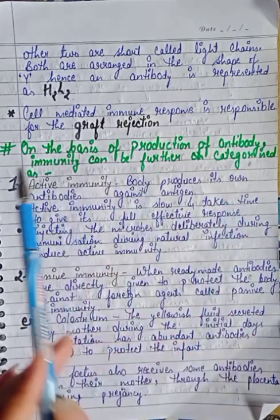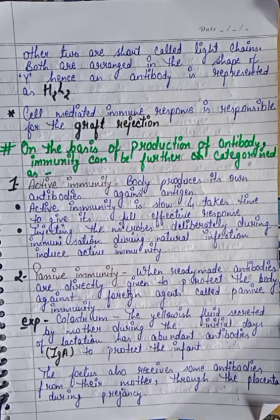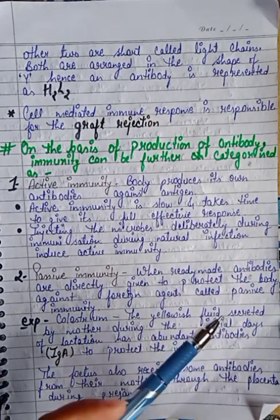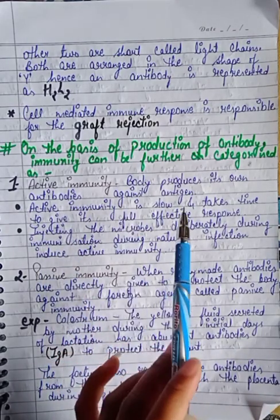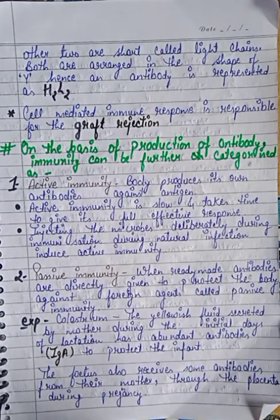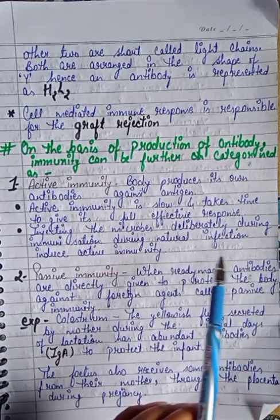On the basis of production of antibody, immunity can be further categorized as active immunity and passive immunity. In active immunity, the body produces its own antibodies against antigens. Our body produces antibodies itself against foreign agents or antigens. Active immunity is slow and takes time to give its full effective response. It is induced during natural infection or by deliberately injecting microbes during immunization.